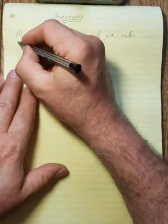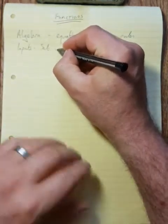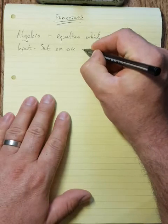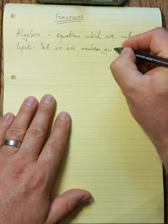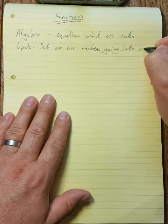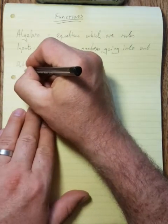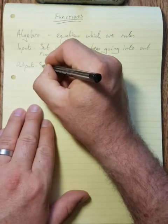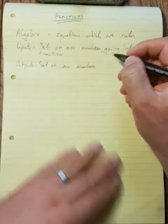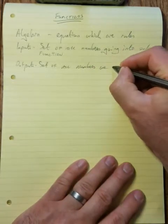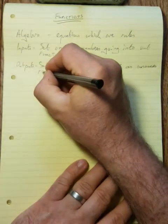When we are dealing with our functions, we have, first of all, what we call our inputs, which is the set of all numbers going into our function. And then we have the outputs, which is the set of all numbers we get as answers from our inputs.